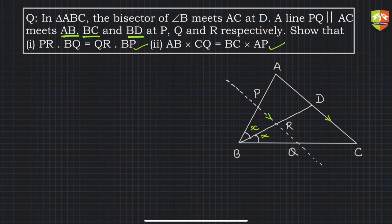The solution is straightforward. The parallel line indicates using Thales' theorem or the Basic Proportionality Theorem, and since there's an angle bisector, the Angle Bisector Theorem will also be used.